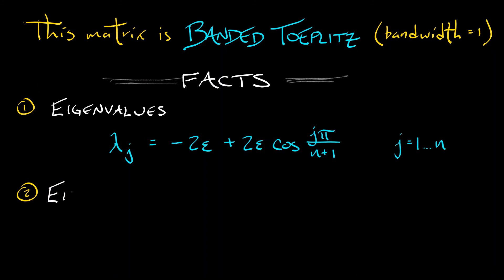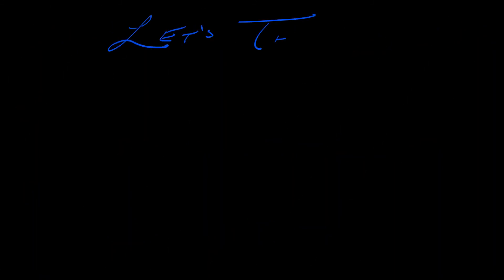What are the eigenvectors corresponding to these? The j-th eigenvector has as its k-th component sine of j times k times pi divided by n plus 1. This smells a lot like there's some complex analysis going on there. Maybe. But let's think.